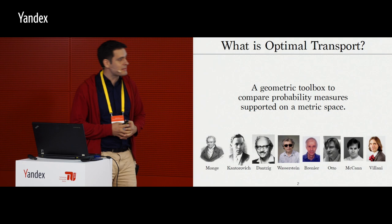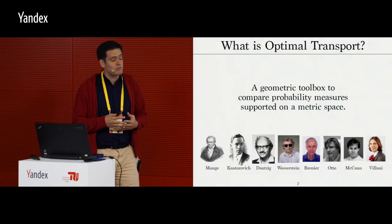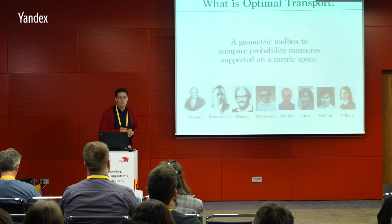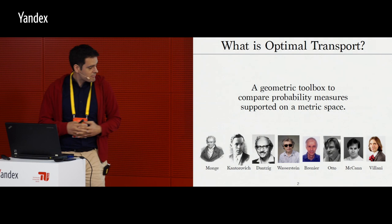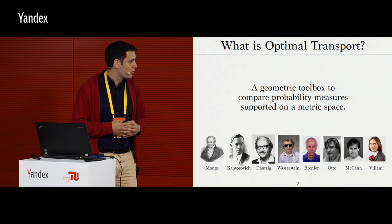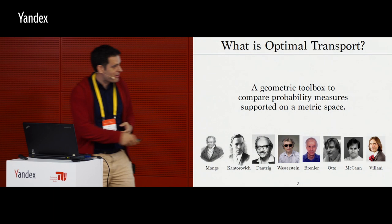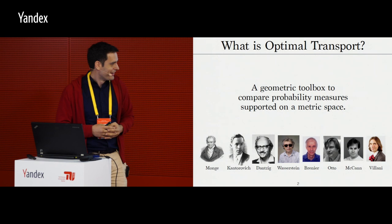I thought I would start by explaining what is this key word: optimal transport. It's a geometric toolbox to compare probability measures supported on a metric space. It's a theory that traces back to Monge in the late 18th century. Then Kantorovich provided very defining ideas. Those ideas were numerically solved by Danzig using linear programming. For some reason people call this the Wasserstein distance, but there is a bit of disagreement. And now we even have a politician who has been involved in optimal transport — there is probability one that you need to do optimal transport if you're a mathematician going into politics.